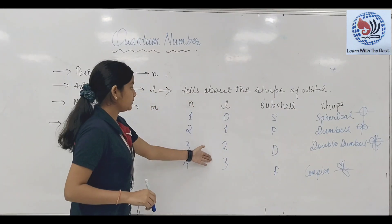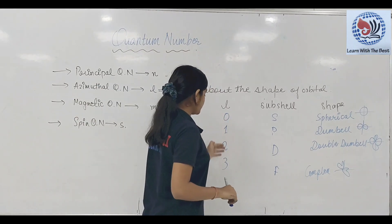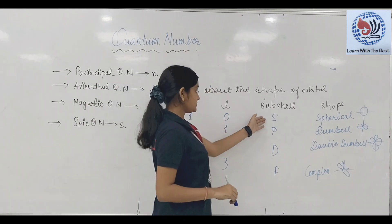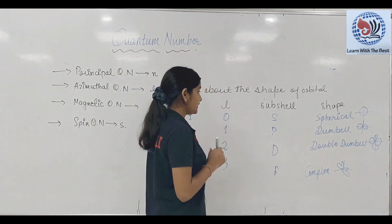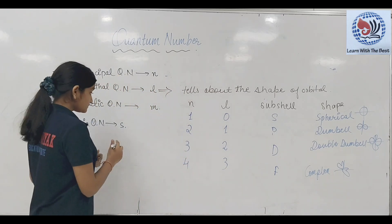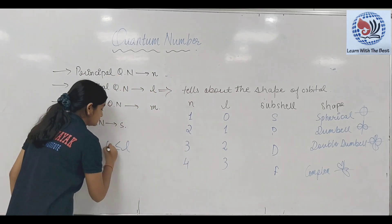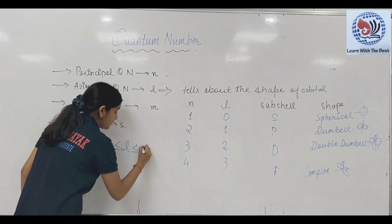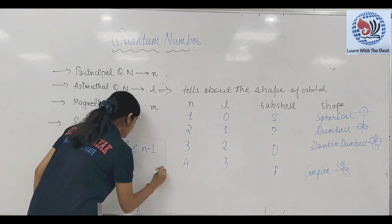तो L की value 0, 1, 2, 3 होती है — इससे हमें पता चलता है कि कौन से sub shell में electron present है। L की जो range होती है वो 0 से n-1 तक होती है।